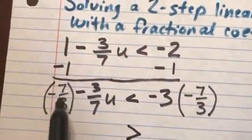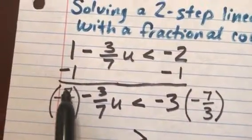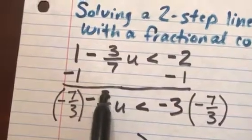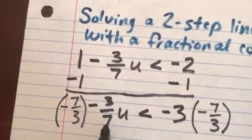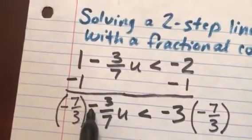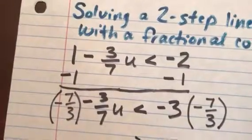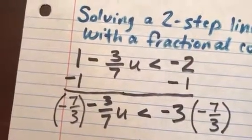And then let's simplify. When I multiply the 7 times 3 would be 21, 3 times 7 would be 21, negative times negative is a positive. So I have 21 over 21u, or just 1u.